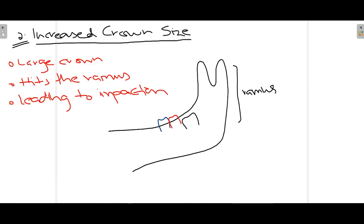The second cause is increased crown size. The third molar is highly variable — not only its crown but also its roots are variable in anatomy, so we cannot predict its form unless seen radiographically. In this case, the crown of the third molar is wider mesiodistally than normal. Even though sufficient space may exist for a normally-sized crown, the larger crown is hindered and will hit the second molar, the ramus, or become impacted in the bone.